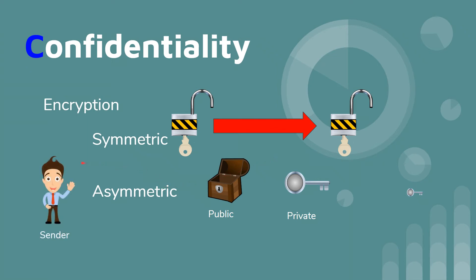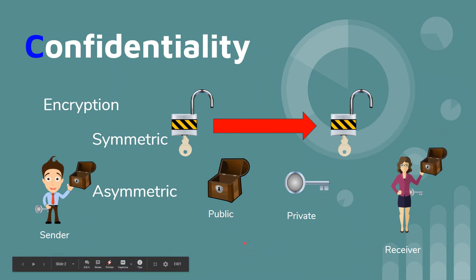So we have a sender with a private key and a public key — the private key he keeps secret, and the public key anyone can use to encrypt something, which only he can open with his private key. The receiver similarly keeps her private key secret and shares her public key. To achieve confidentiality, if he's sending to her, he uses her public key to encrypt, and only she can decrypt it with her private key — and vice versa.